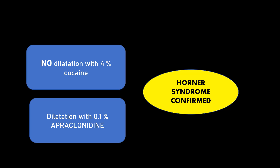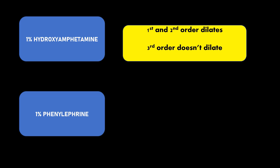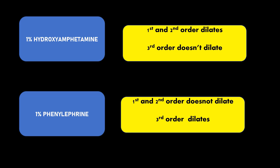To summarize: for diagnosis of Horner syndrome, we use cocaine and apraclonidine. No dilation with 4% or 10% cocaine, or dilation with 0.1% apraclonidine, confirms Horner syndrome. For localization: with 1% hydroxyamphetamine, first and second order Horner will dilate and third order will not dilate. With 1% phenylephrine, first and second order will not dilate and third order will dilate.